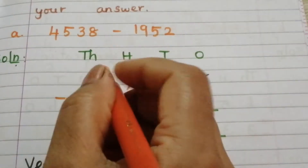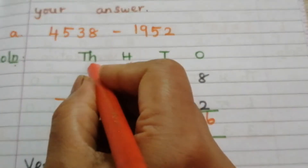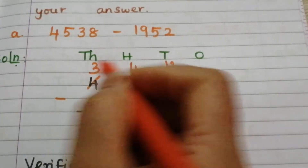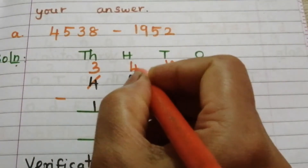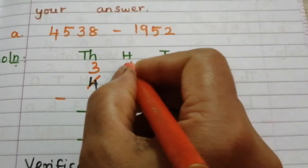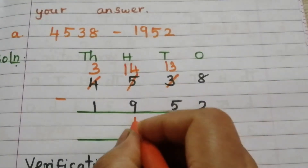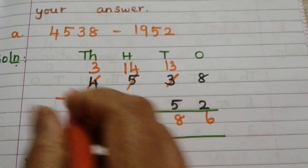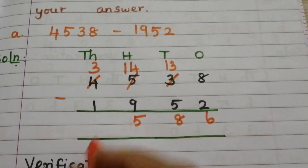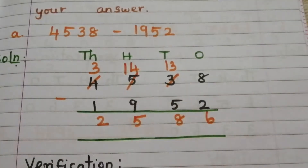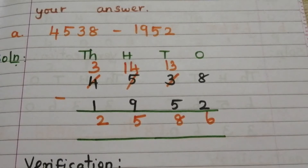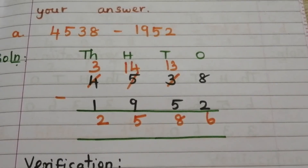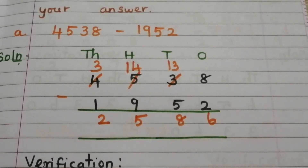3 becomes 13. 13 minus 5 is 8. We can't subtract 9 from 4, so borrow again. 4 becomes 3 and this 4 becomes 14. 14 minus 9 is 5, and 3 minus 1 is 2. So the answer is 2586. Now we are going to check whether our answer is correct or not.